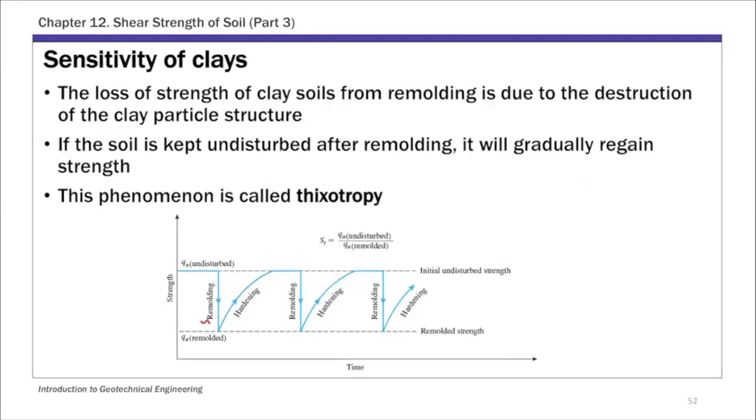So you have remolding. So first the undisturbed, unconfined compression strength, QU is at a higher level. And upon remolding, that QU value decreases. And that degree of disturbance we measured using ST. But if you keep clay undisturbed, it's going to gradually regain strength. So you see this hardening behavior. And this phenomenon is called thixotropy. So basically, the process of clay gradually regaining strength when it's kept undisturbed after remolding. Again, if you remold, you see all these cycles here. If you remold, the QU value is going to decrease and then it's going to harden if you keep it undisturbed.